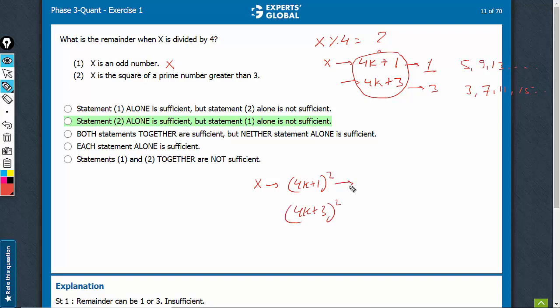In such a case, the value is 16k squared plus 8k plus 1. In this case, the value is 16k squared plus 24k plus 9.